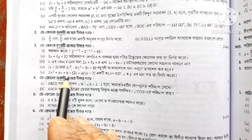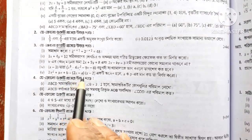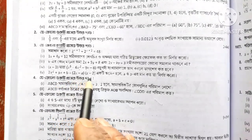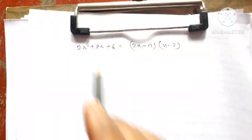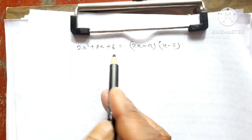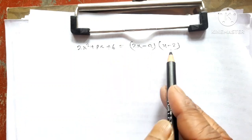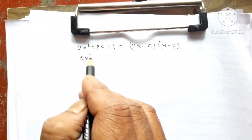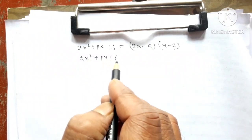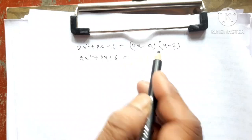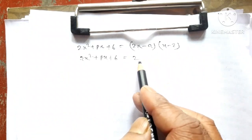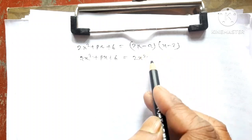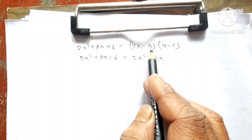This will be 2x squared plus bx plus 6. So 2x minus e, into x minus 2. When we do A and P at the equal footing, which we write? We write 2x squared plus px plus 4. This is very good. Then we write again 2x squared and equal 2x squared.